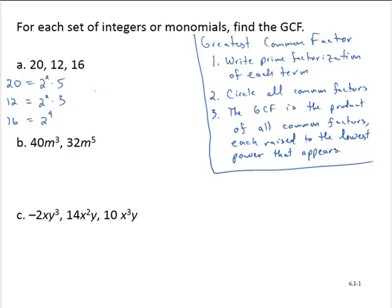So then the GCF — we circle all the common factors. There's really only one common factor, and that's 2. The GCF is the product of all the common factors. There's only one common factor, which is 2, raised to the lowest power that appears. The lowest power that appears in those factorizations is the second power, so the GCF is 4. The greatest common factor of 20, 12, and 16 is 4.